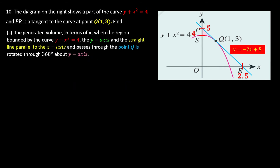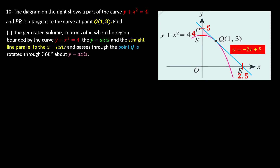Now for question c — finding the volume generated in terms of π when the region bounded by the curve is revolved around the y-axis. We shade the region first: we shade along the curve, then highlight the y-axis, then draw the straight line parallel to the x-axis. A line parallel to the x-axis is a horizontal line, and it passes through point Q.